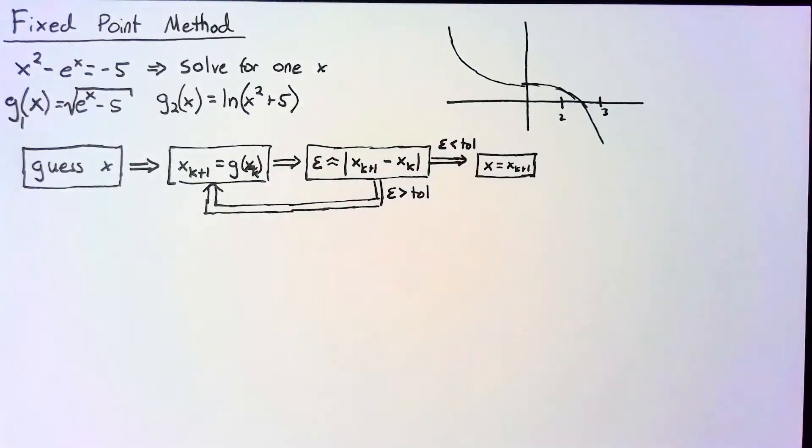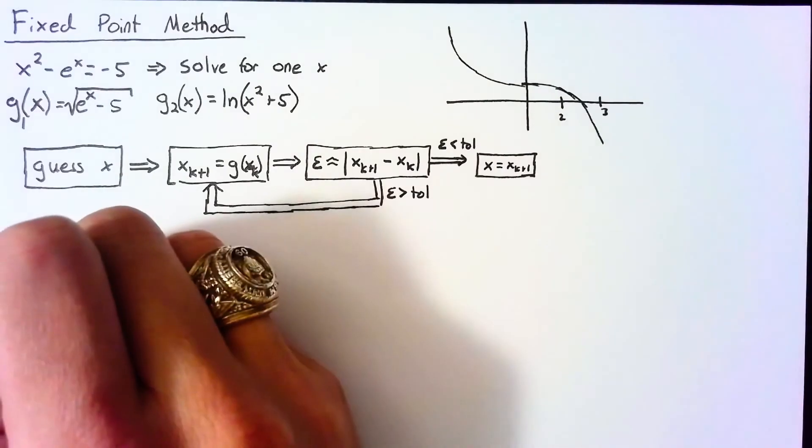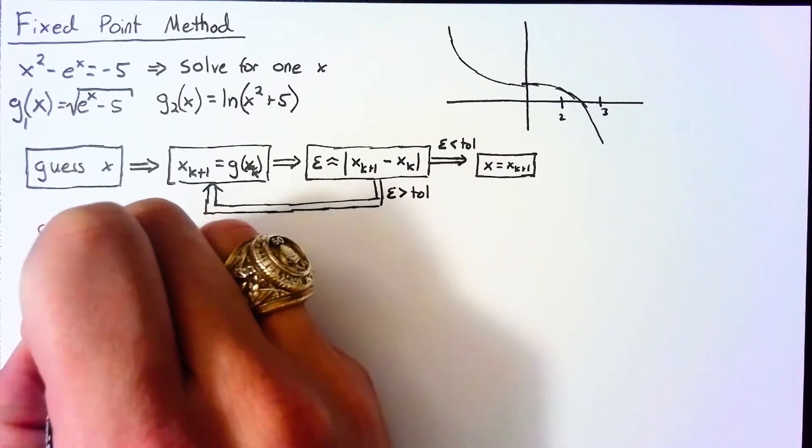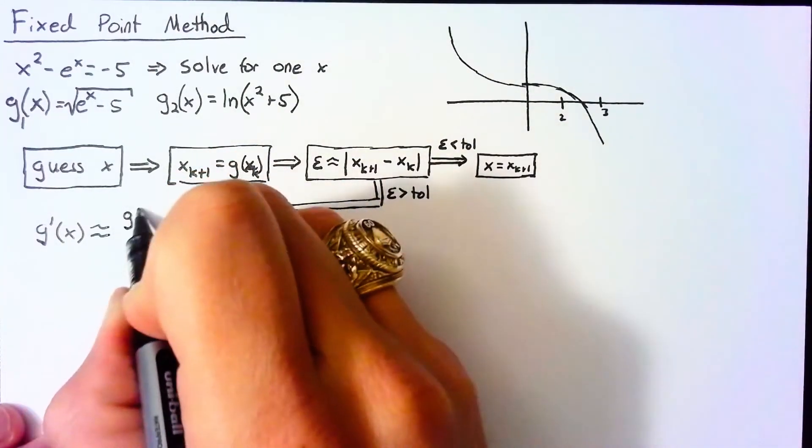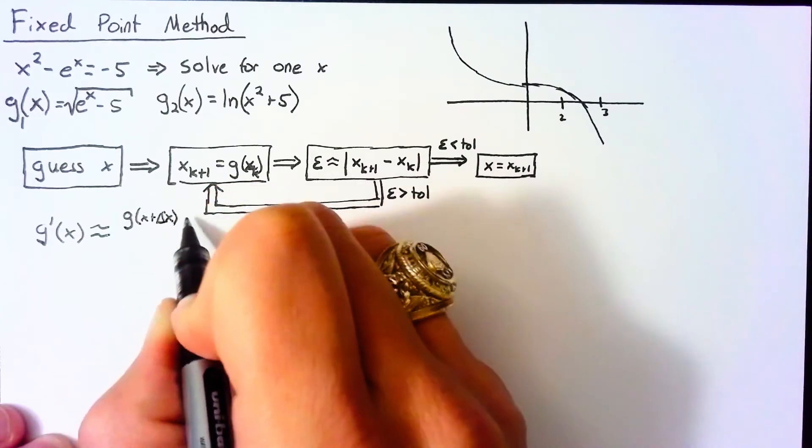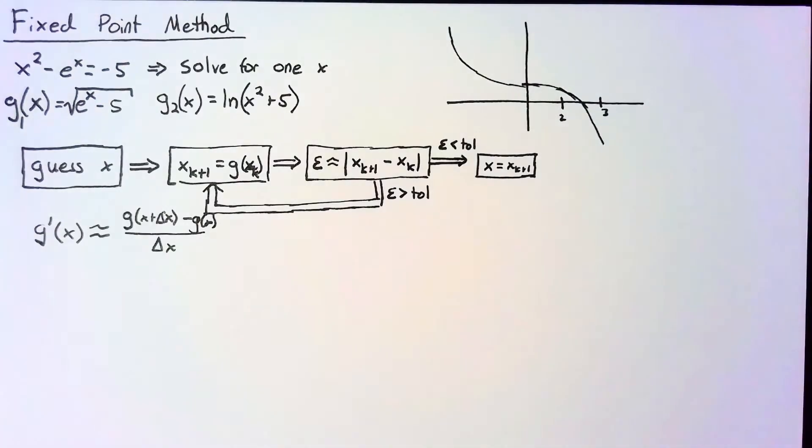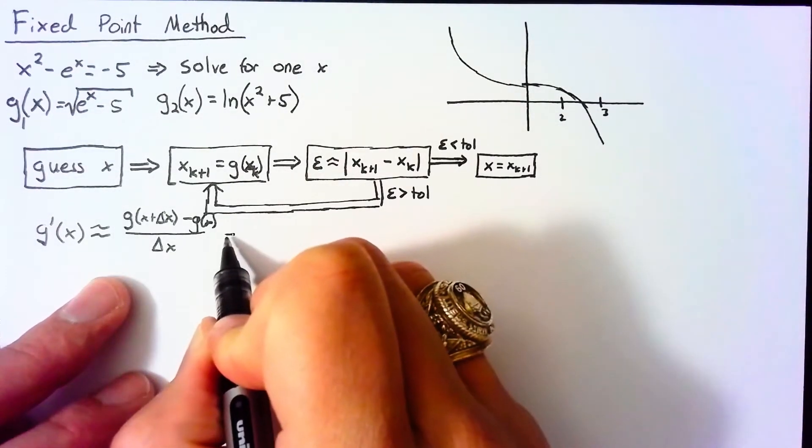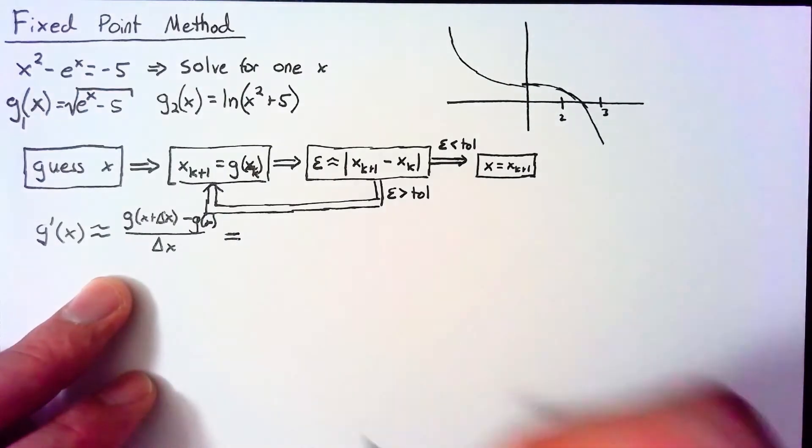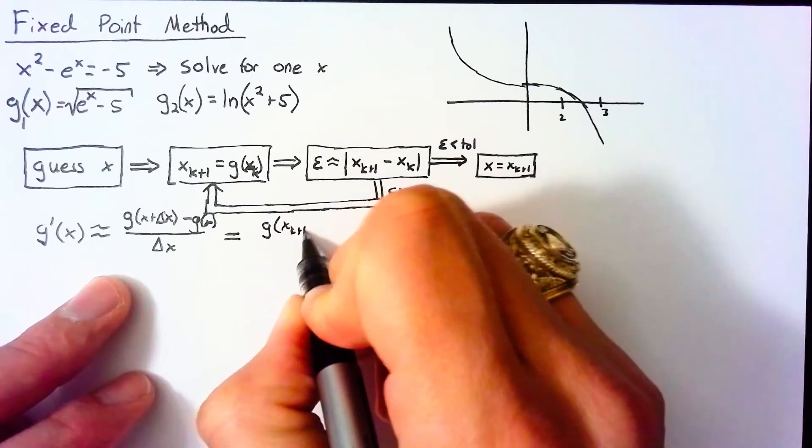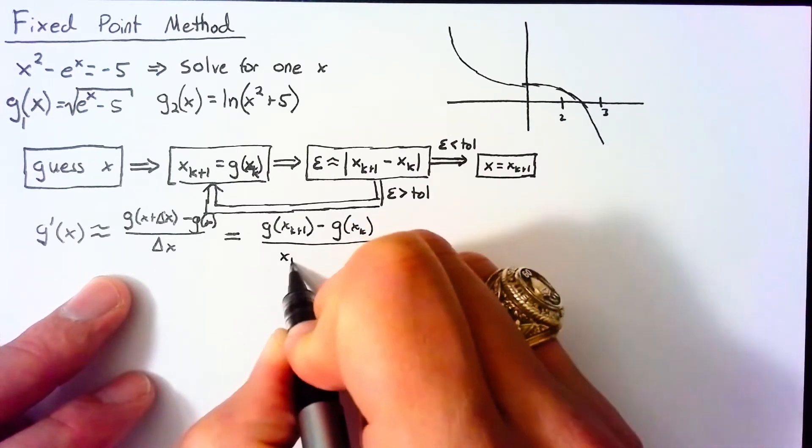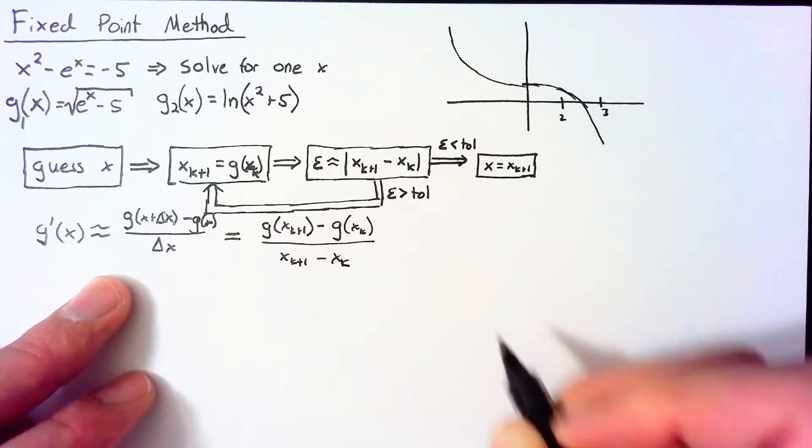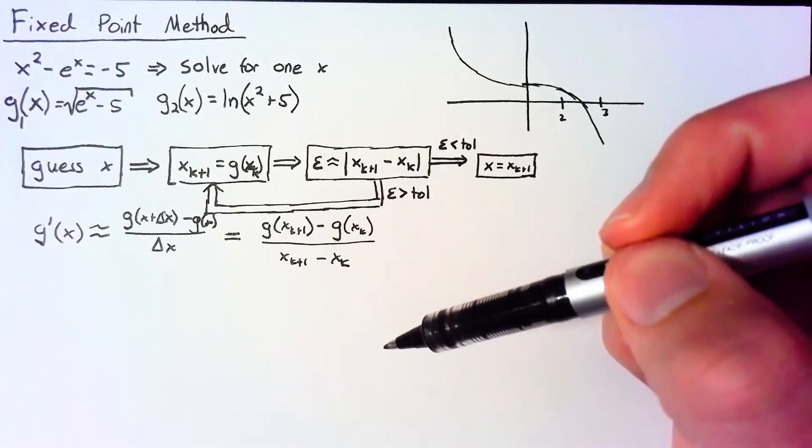So what is a good way of guessing before we actually try things if something is going to work? Well, we can look at the derivative. So if we look at g'(x), this is approximately equal to [g(x + Δx) - g(x)] / Δx.